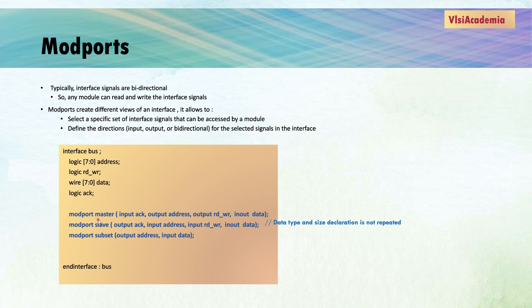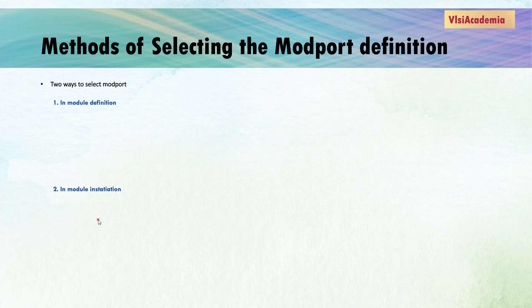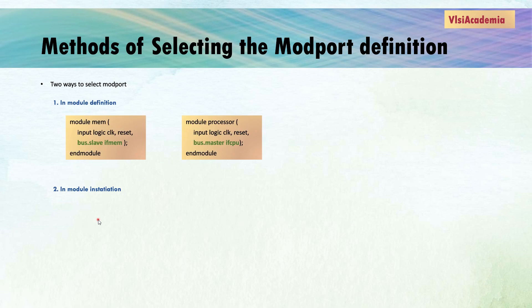In this slide we have seen how to define modports in an interface. In the next slide, I will explain how we can select these interface modports in a module. There are two ways for selecting modports. While defining a module or while instantiating a module, we would want to define which interface modport it would use. First, we can select the modport while defining the module itself. Second, we can select the modport during module instantiation. Here I have declared two modules — module mem and module processor. I want to use modport master of interface bus in module processor, and for module mem, I want to use modport slave of interface bus.